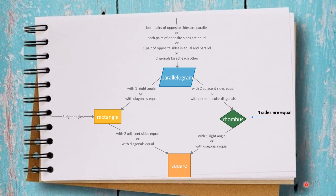Just imagine this map every time you want to prove something. Imagine the parallelogram moving to a rhombus, or the rhombus moving to a square — what happens to the diagonals and to the sides. It will be very easy to memorize them.